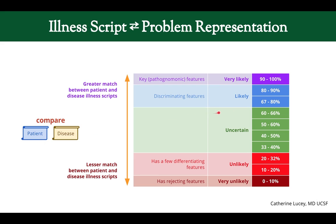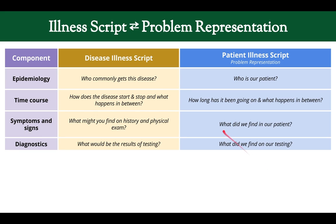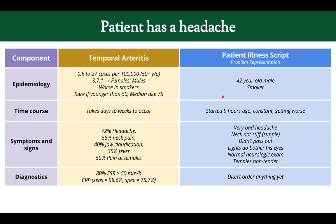Let's look at an example. We have our disease illness script and patient illness script. The patient has a headache, and we're going to consider temporal arteritis — also called giant cell arteritis — a disease with significant consequences if missed. Its epidemiology: 0.5 to 27 cases per hundred thousand, more common in females, worse in smokers, very rare under age 50, with a median age of 75.